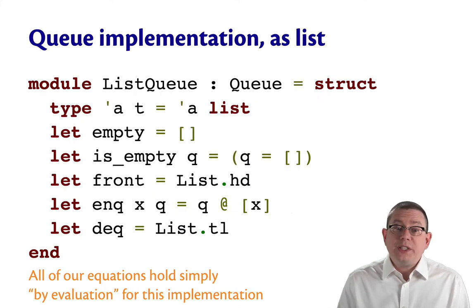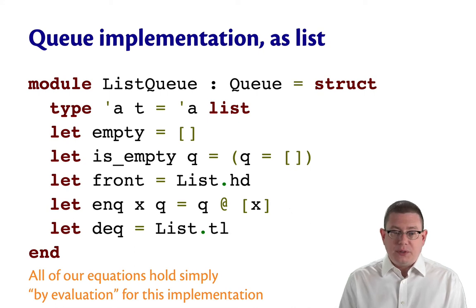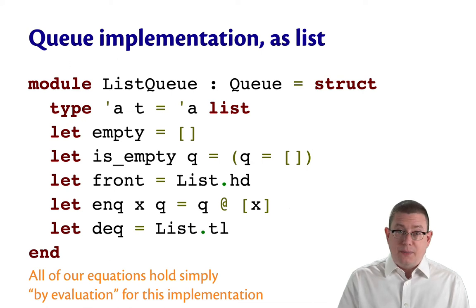We can, once more, implement queues very simply as lists, just using mostly list module functions, append, and so forth. And all of these equations that I just showed you do hold simply by evaluation for this implementation as well. There's nothing very deep about that.